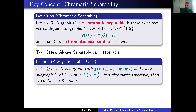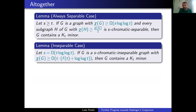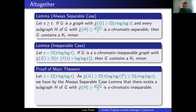Here are the two main lemmas. In the always-separable case: if G has chromatic number s·(log log T), s≥t, and every subgraph with at least half the chromatic number is separable, then G contains a Kt minor. In the inseparable case: if G is t(log log T)-chromatic-inseparable and has chromatic number at least t·log log T (plus that f(T) error term, giving (log log T)^6), then G contains a Kt minor. To put it together: let s = t·log log T; if you're always separable you get a Kt minor directly, so you must have some high chromatic inseparable subgraph, and then you apply the inseparable lemma.